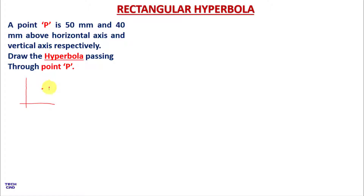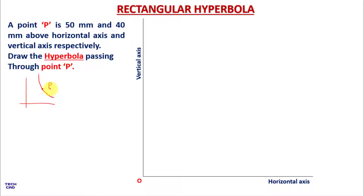We have a point P and the hyperbola should pass through this. Let's make the horizontal and vertical axis — mark point O and from this point make a horizontal and vertical axis up to any dimensions. Then take a measurement of 50 mm on the vertical axis and mark point B, and 40 mm on the horizontal axis and name it A. From point B make a horizontal line of 40 mm and from point A make a vertical line of 50 mm. Where these two lines meet, that point is P.